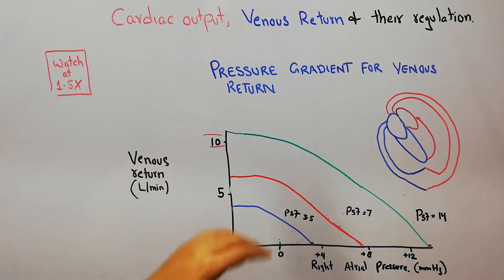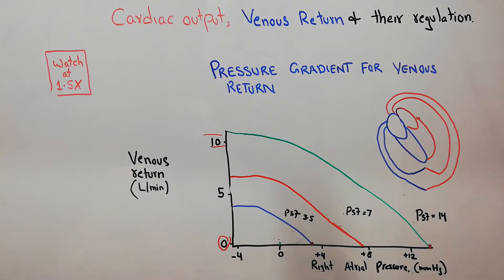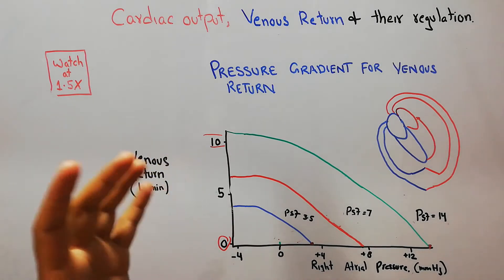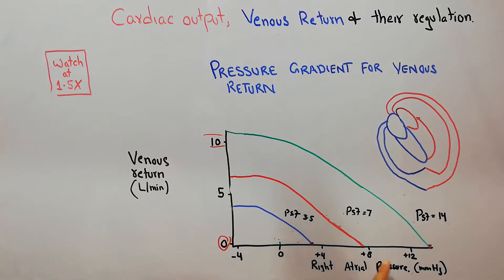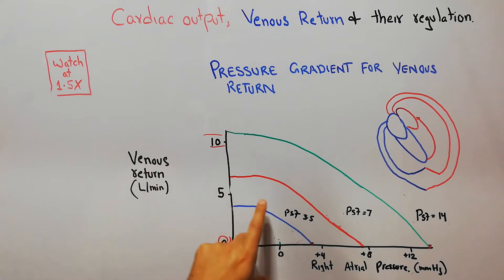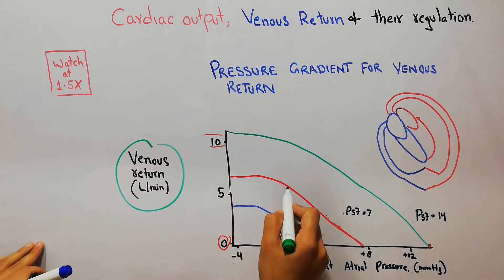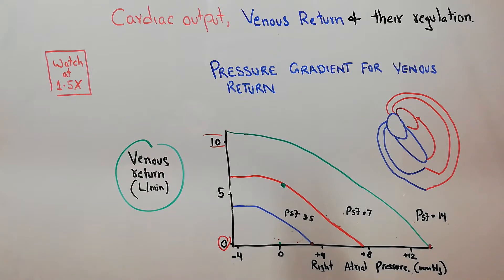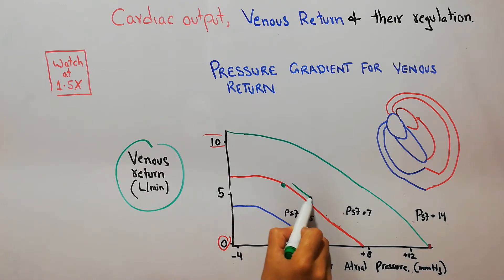We have previously discussed that in the normal venous return curve, in a normal human being with a normal right atrial pressure of around 0 mmHg, the venous return is around 5 liters per minute. When the right atrial pressure starts increasing, the venous return starts decreasing.